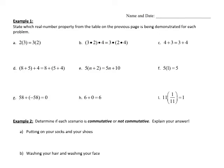Go ahead and turn your paper over. We're going to practice some problems that ask us to state which real number property from the table is being demonstrated. In problem A, we have a multiplication problem: 2 times 3 and 3 times 2. Is it the associative property — are there brackets grouping numbers together? Or is it just the commutative property of multiplication? In this case, it's the commutative property of multiplication.